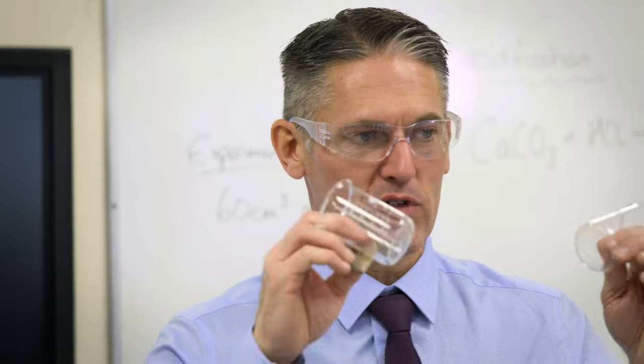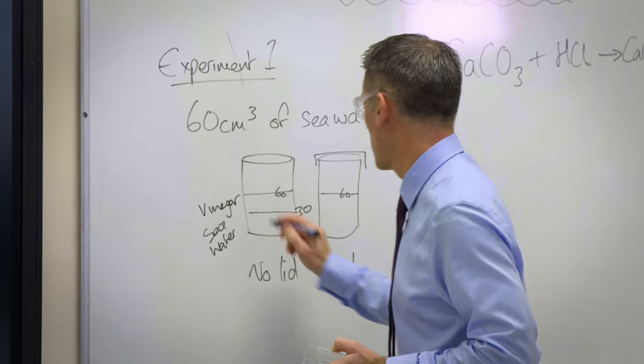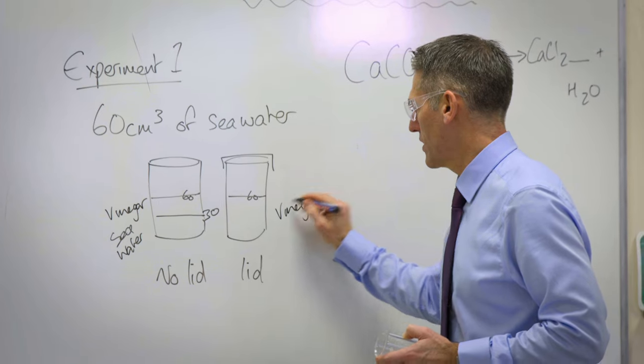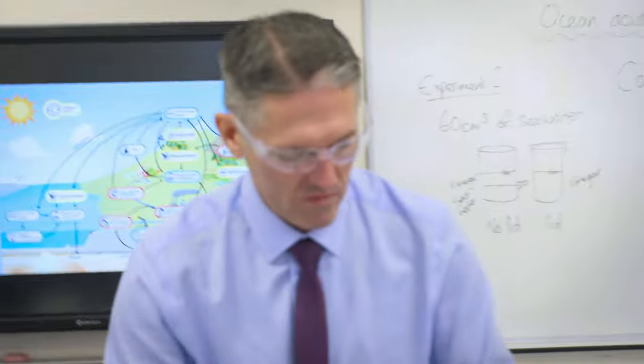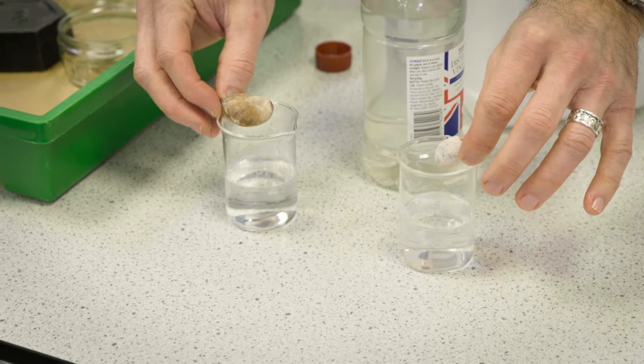Now we're looking at the effect of that slightly more acidic seawater on living things like seashells, which have calcium carbonate in their exoskeletons. You should have two beakers. In the first beaker, put seawater up to 30 centimetres cubed, then add 30 centimetres cubed of white vinegar — a half and half mix. In the second beaker, do 60 centimetres cubed of vinegar only. We're placing both shells at the same time and writing down observations. The shell in the full vinegar will dissolve quicker because the vinegar is more acidic.